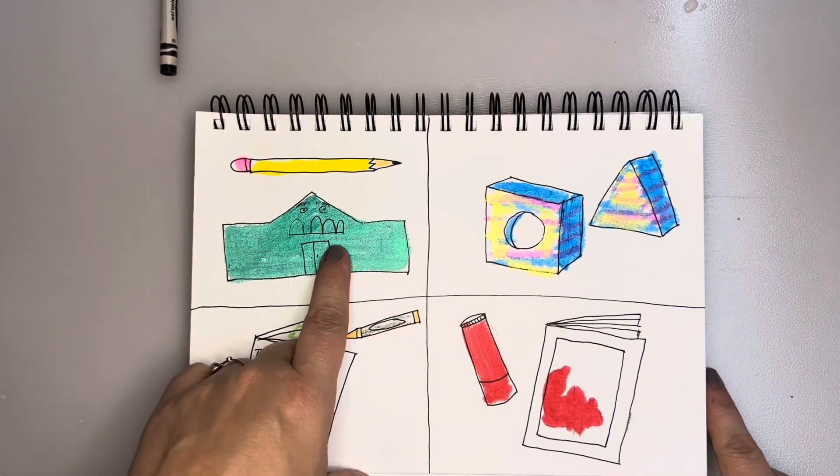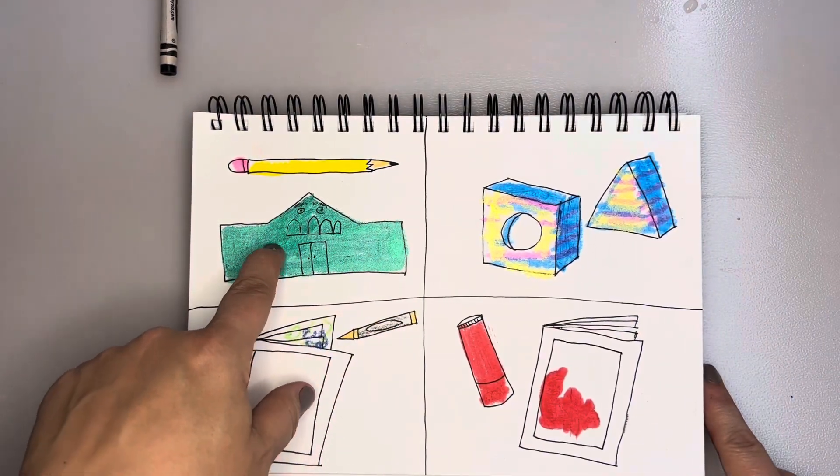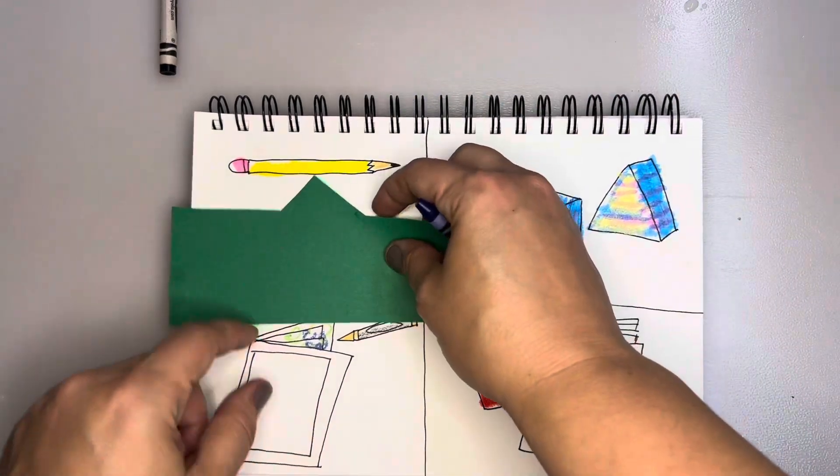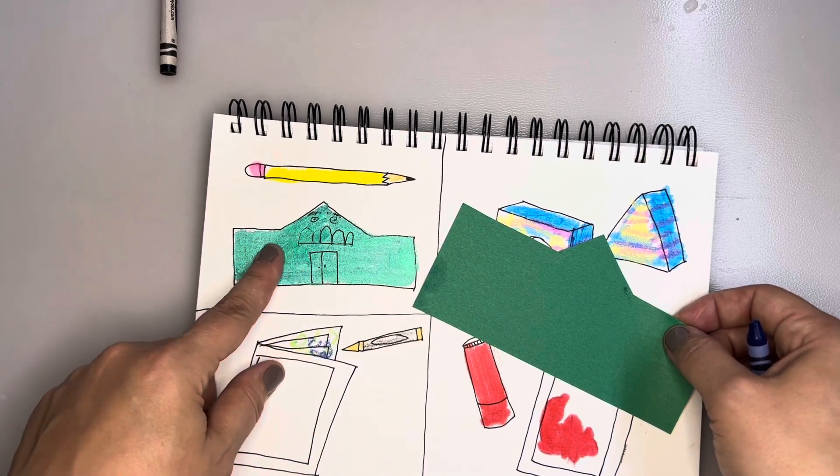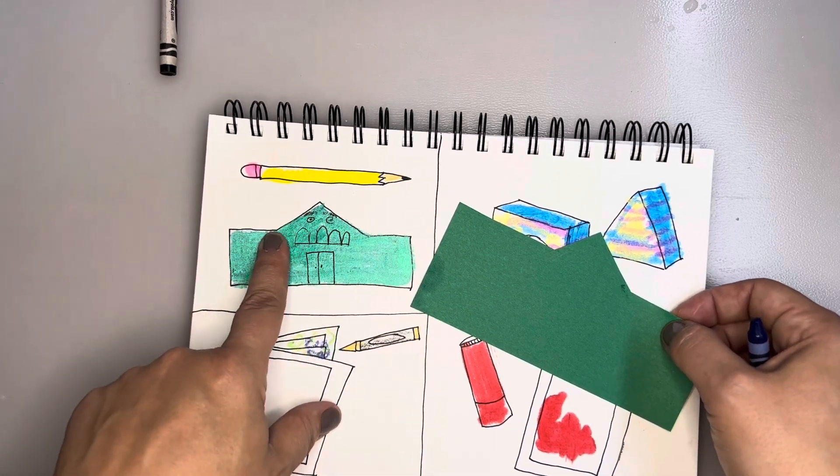One choice is to make a school. You can draw or use cut paper, and there will be a pencil for you to add features to your school that make it more like our school or more like the school in the book.